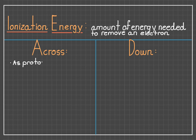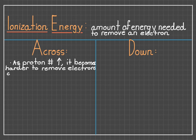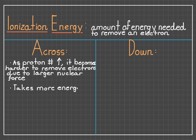Now let's move on to ionization energy, which is the amount of energy needed to take away an electron. And as we go across, as we have increasing amounts of protons, it becomes harder to take away electrons due to the high nuclear force exerted on them. This means it takes much more energy to take electrons away from atoms with more protons, which shows that ionization energy is going to increase as we go across the periodic table.